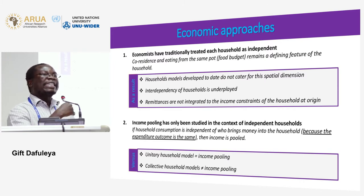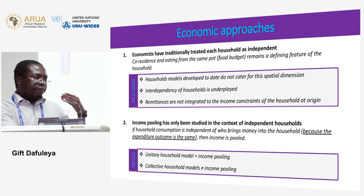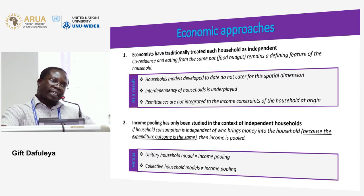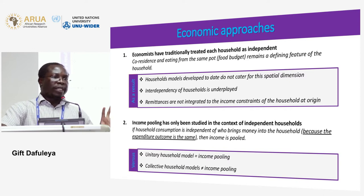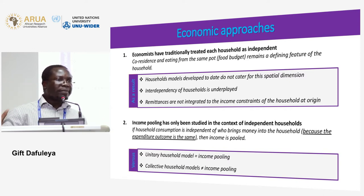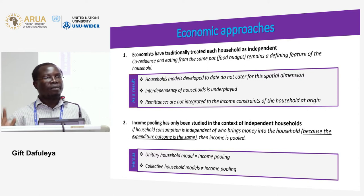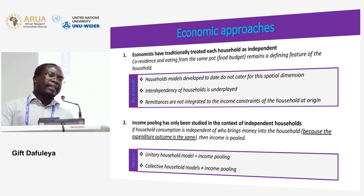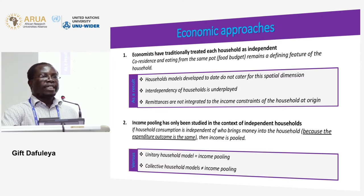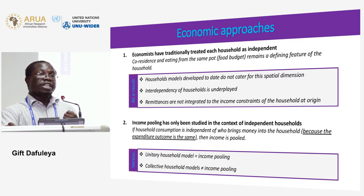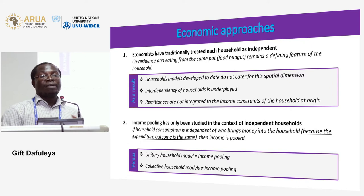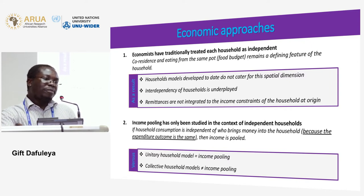I am interested in the expenditure outcomes of that money. For instance, if a man receives a hundred dollars and is at liberty to use it for the household or for themselves, are those expenditure outcomes the same as for a woman? If we take that hundred from a man and give it to a woman, will the expenditure outcomes be the same? If yes, we have income pooling — so income pooling is a stringent approach.